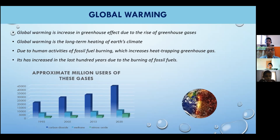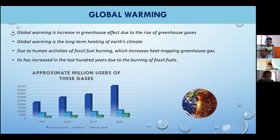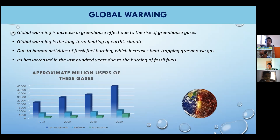The first picture shows approximate uses of greenhouse gases — carbon dioxide, methane, and nitrous oxide. In 1995, carbon dioxide was 22,000, methane was 6,000, and nitrous oxide was 1,000. At 2005, carbon dioxide was 2,057,000, methane was 65,000, and nitrous oxide was 1,700. At 2015, carbon dioxide was 3,25,000, methane was 10,000, and nitrous oxide was 60,000.